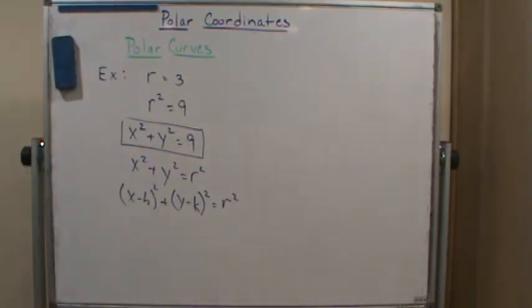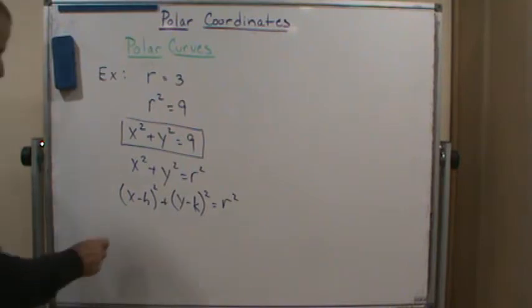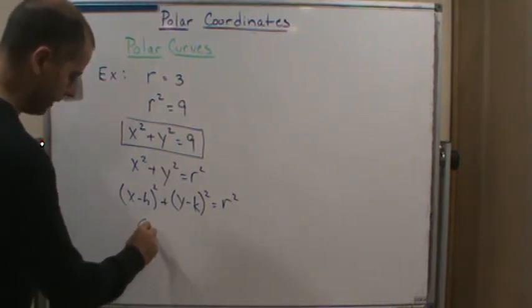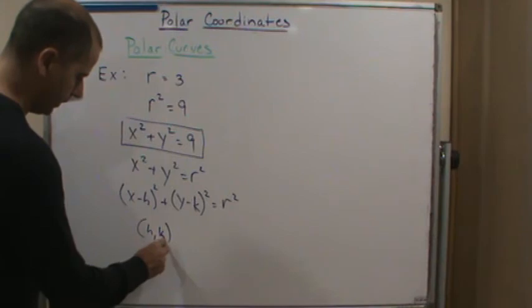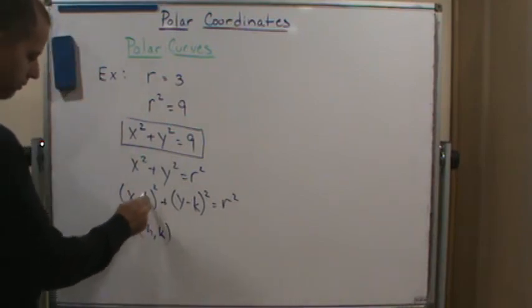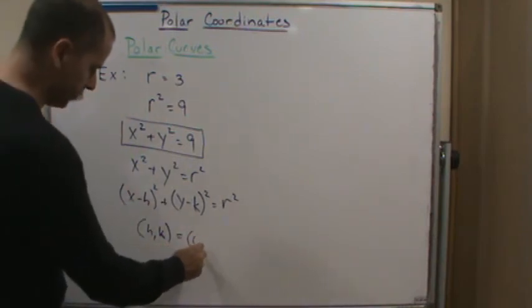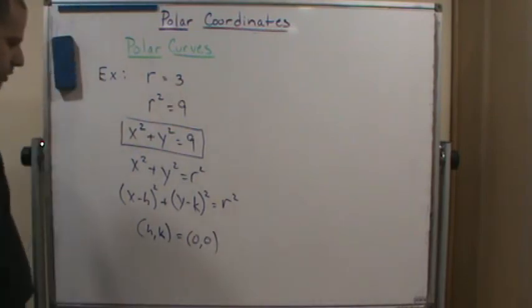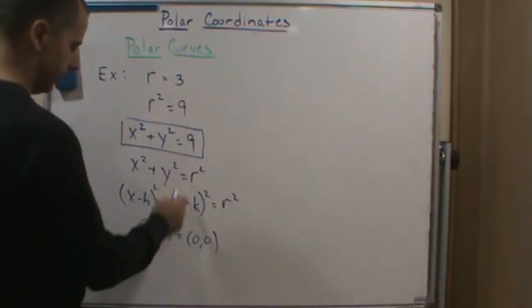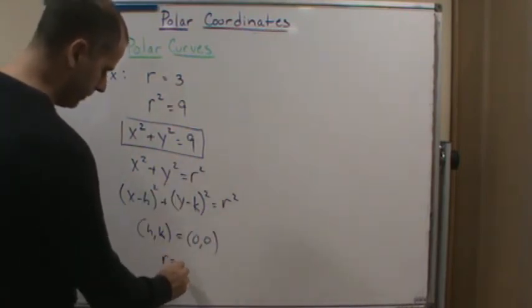Again, the center is h comma k. In this case, they're both zero. H and k equals zero, so it's the origin. The center is the origin, and r is 3, just like I said.